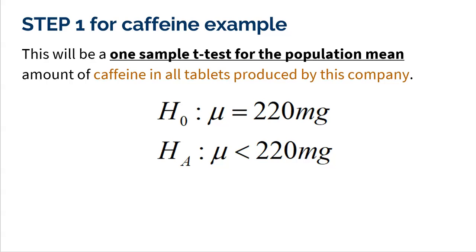Now the first question a lot of kids ask is, whoa, on my calculator there's a one sample t- or z-test. Why don't I use a z-test here? Well, when you're working with means, you can only use a z-test or z-interval when you know the standard deviation of your population.